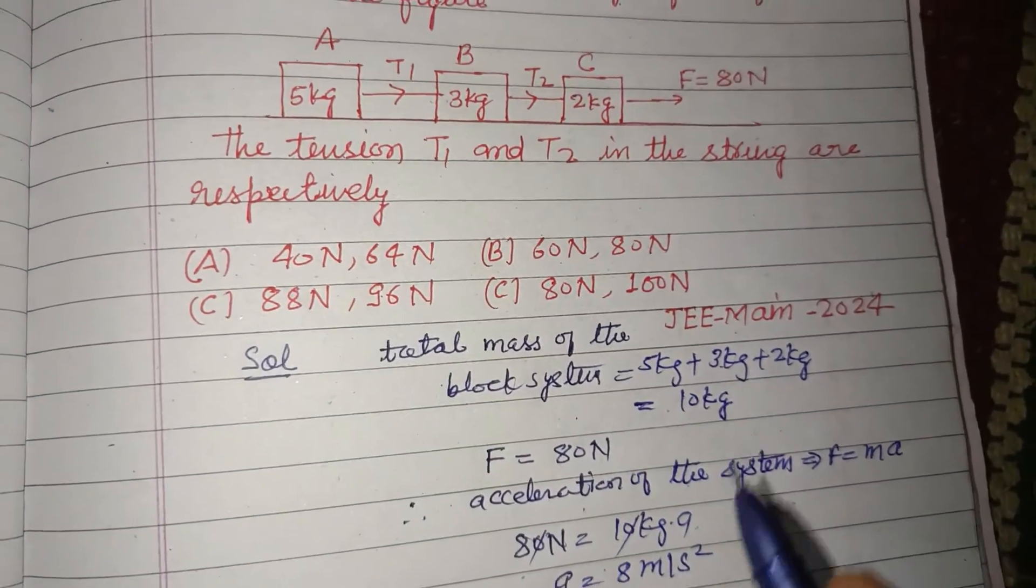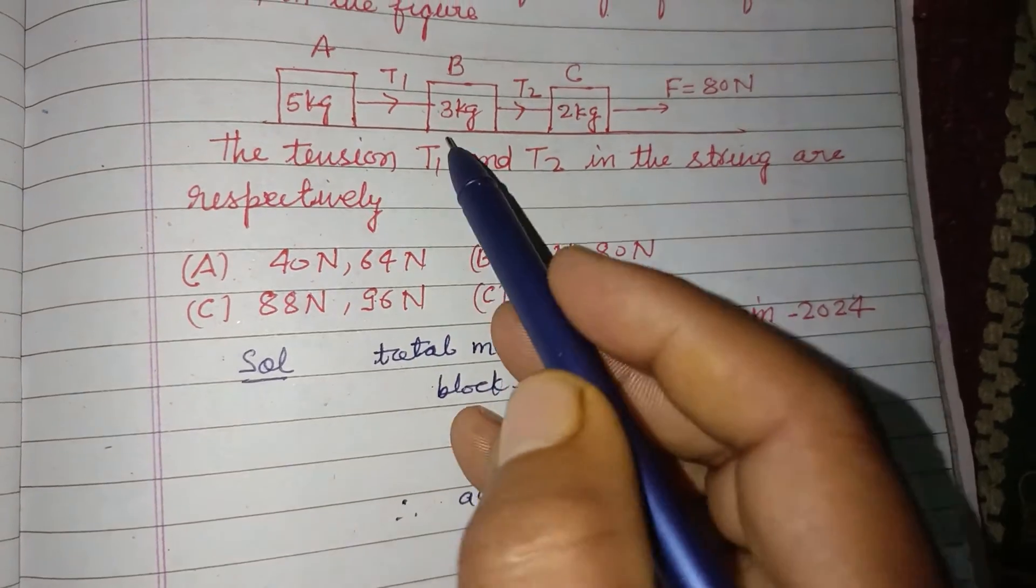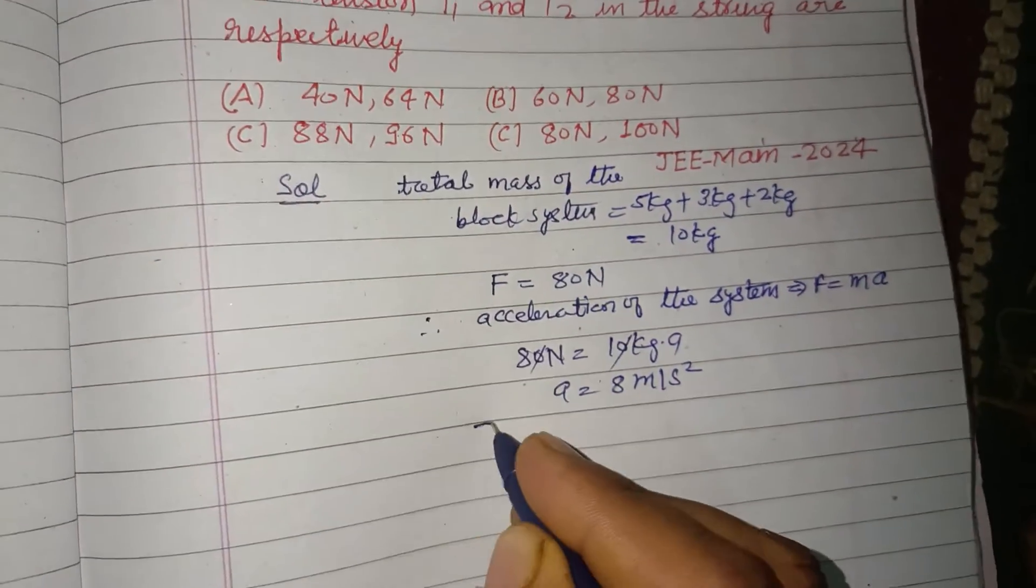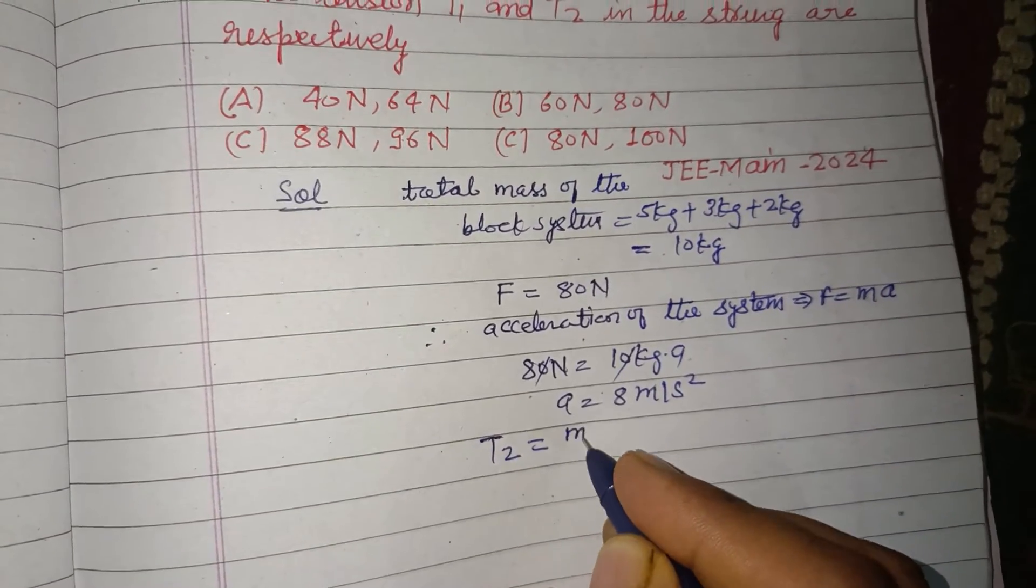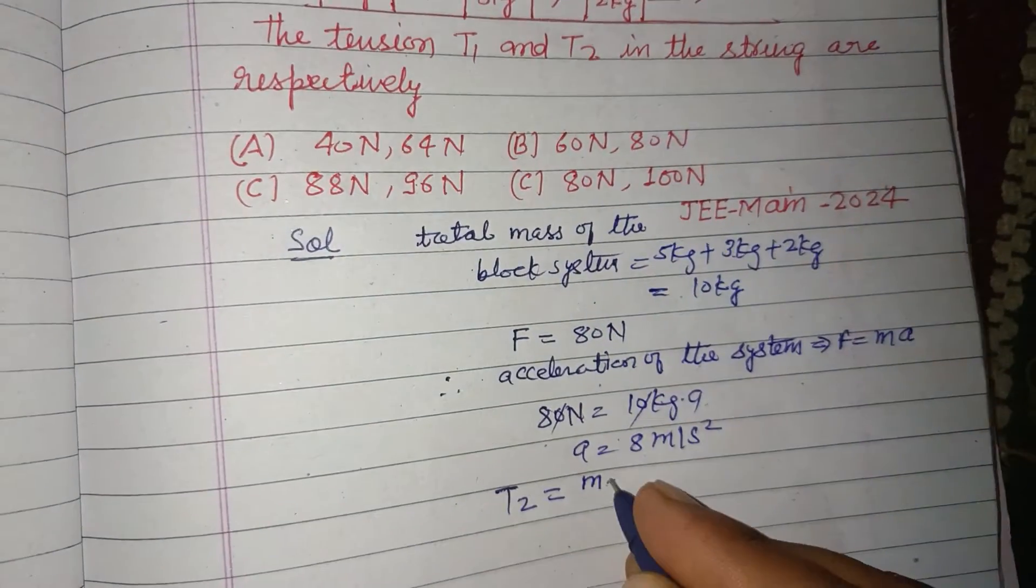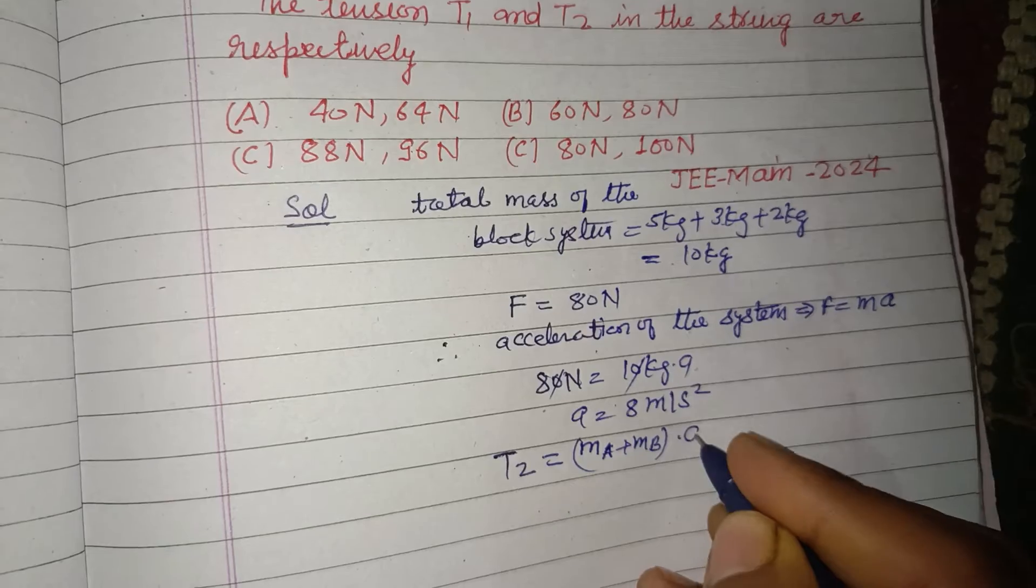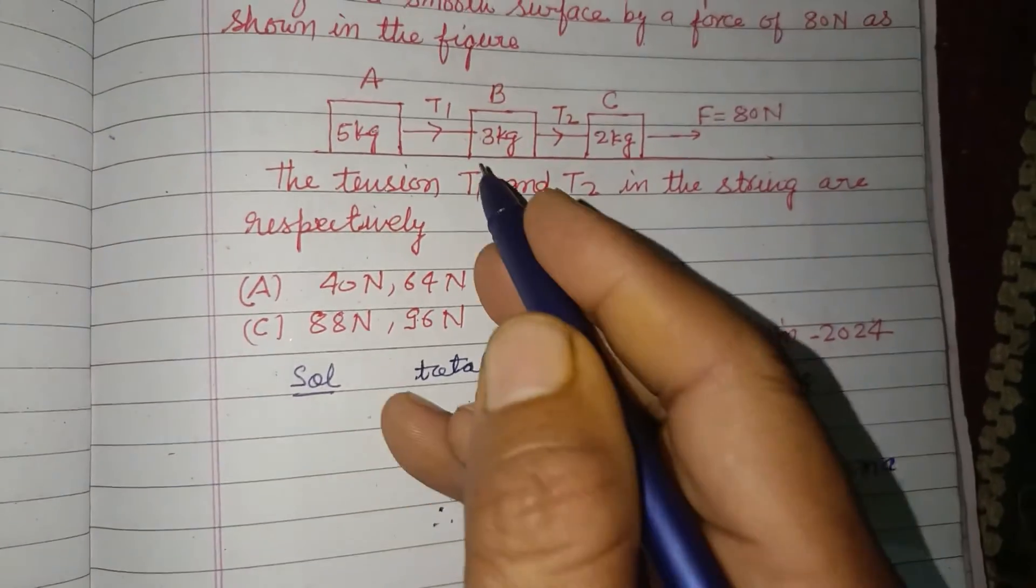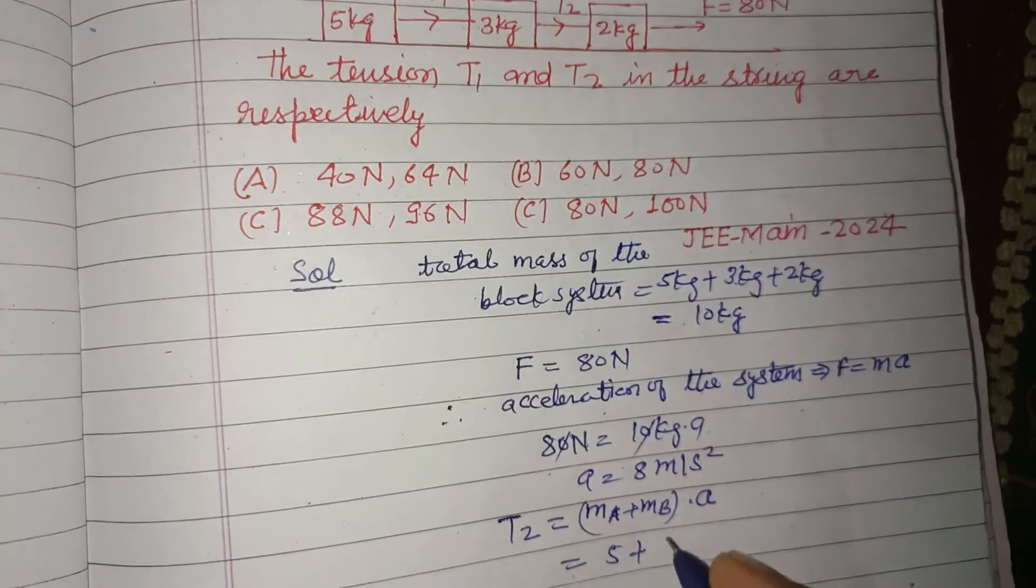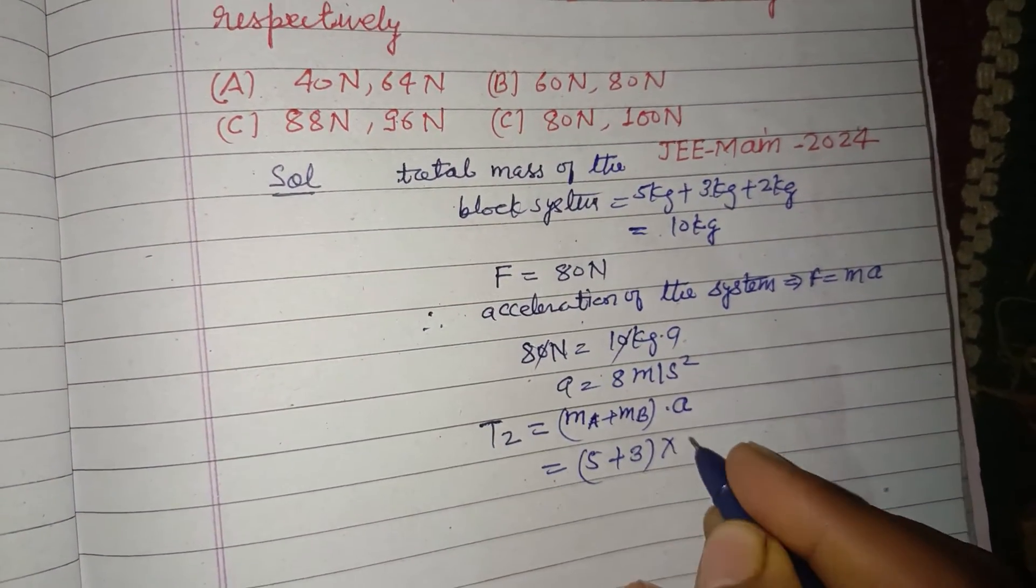Now T2 is due to these two blocks, 5 kilogram and 3 kg. So T2 equals MA plus MB into A. So MA is 5 kg and MB is 3 kg into A is 8.